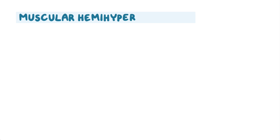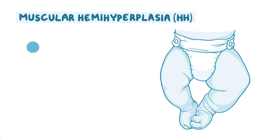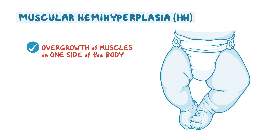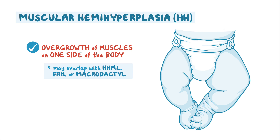Muscular hemihyperplasia, or HH, causes an overgrowth of muscles on one side of the body, so may overlap with HHML, FAH, and macrodactyly. HH is usually present at birth.